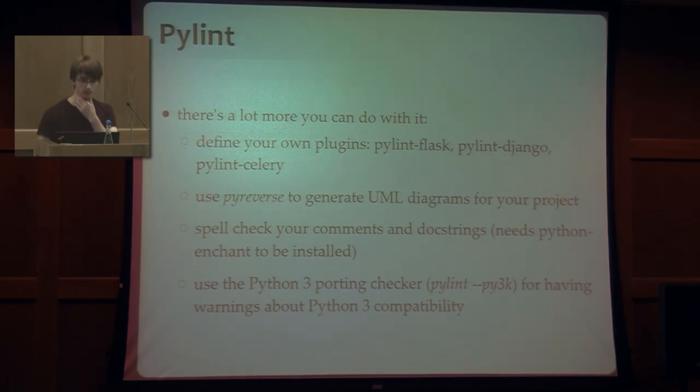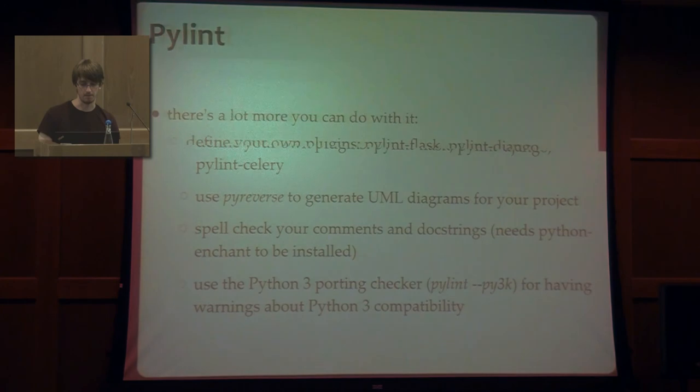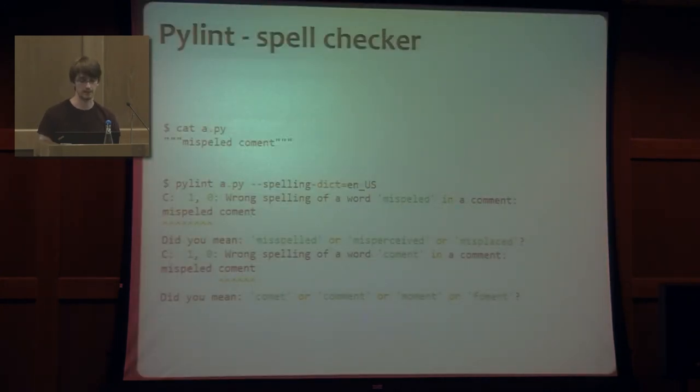There's a lot of things you can do with PyLint. You can actually define your own plugins if you want to. There are quite a lot of them for most known projects like Django, Flask, or Celery. You can also use a tool which comes with PyLint called Pyreverse to generate UML diagrams for a project. Also we have a spell checker and a Python 3 porting checker. And let's see the spell checker in action. As it is in this example where I have a comment with two words that are misspelled. And just by activating the spell checker with an English dictionary, it's going to say, hey, you misspelled this word. Did you mean this variant of the word or that variant? And this can be really useful.